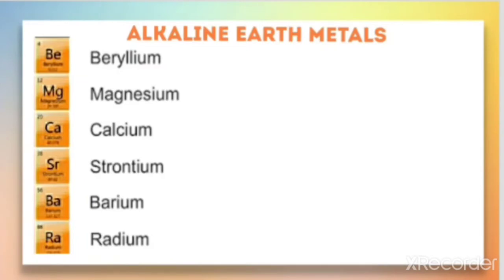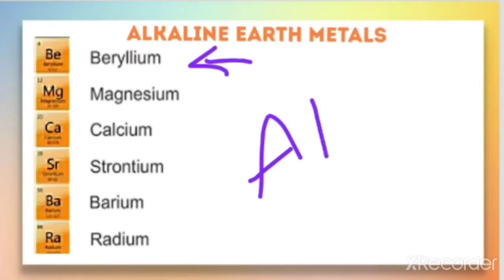They follow the alkali metals in the periodic table — that means after the first group, the second group elements are there. From these elements, except beryllium, they are known as alkaline earth metals, because the first member beryllium shows differences from its own group members due to the diagonal relationship with aluminium, and therefore beryllium shows similarity to aluminium.